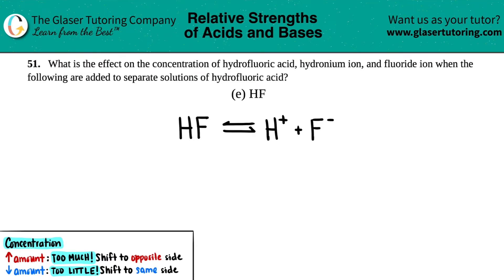Number 51. What is the effect on the concentration of hydrofluoric acid, hydronium ion, and fluoride ion when the following are added to separate solutions of hydrofluoric acid? We have letter E. In this case, we need to figure out what happens when we add HF, which is hydrofluoric acid.